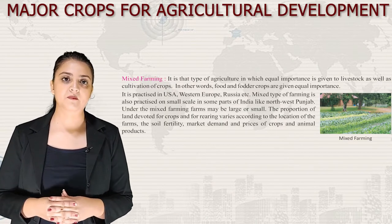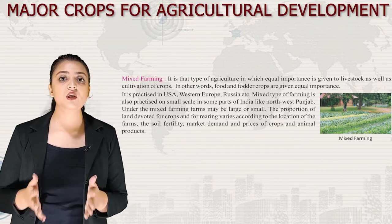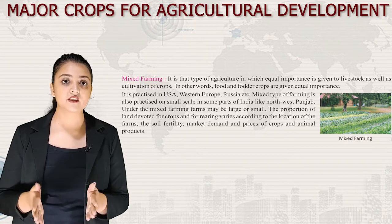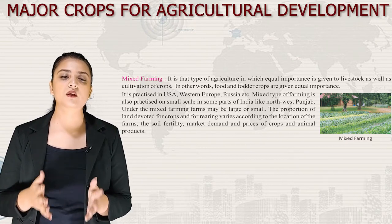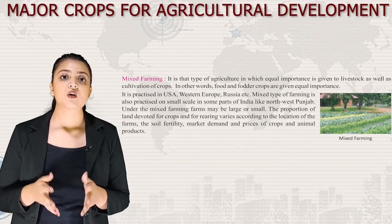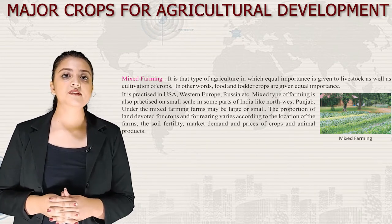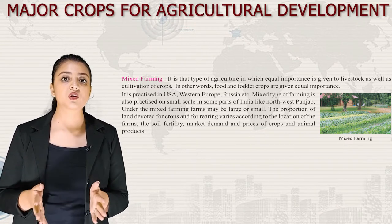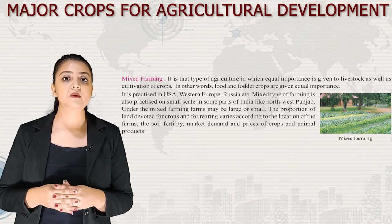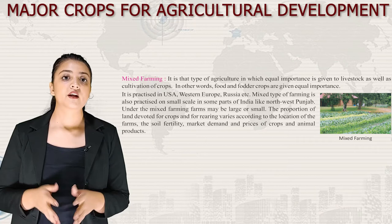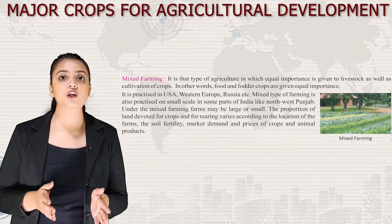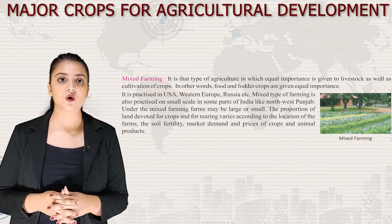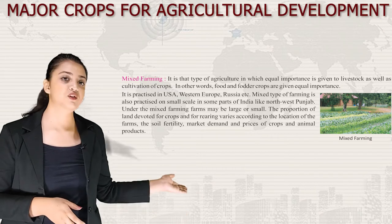Next we have mixed farming — agriculture in which equal importance is given to livestock as well as cultivation of crops; food and fodder crops are given equal importance. It is practiced in the USA, Western Europe, Russia, etc. Mixed farming is also practiced on a small scale in some parts of India, like Northwest Punjab. Farms may be large or small, and the proportion of land for crops versus livestock varies according to location, soil fertility, market demand and prices.